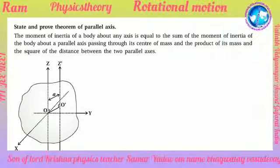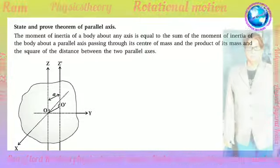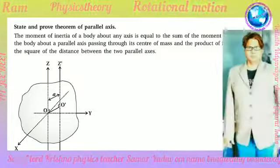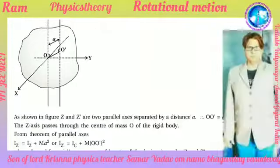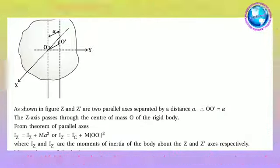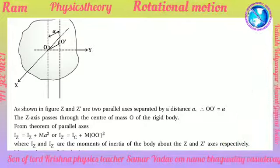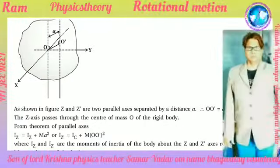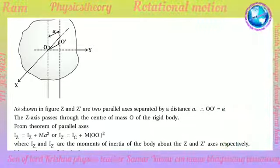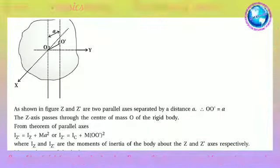State and prove the theorem of parallel axis. The moment of inertia of a body about any axis is equal to the sum of the moment of inertia about a parallel axis passing through its center of mass and the product of its mass and the square of the distance between the two parallel axes. As shown in the figure, z and z' are two parallel axes separated by distance a; OO' = a. The z-axis passes through the center of mass O of the rigid body.